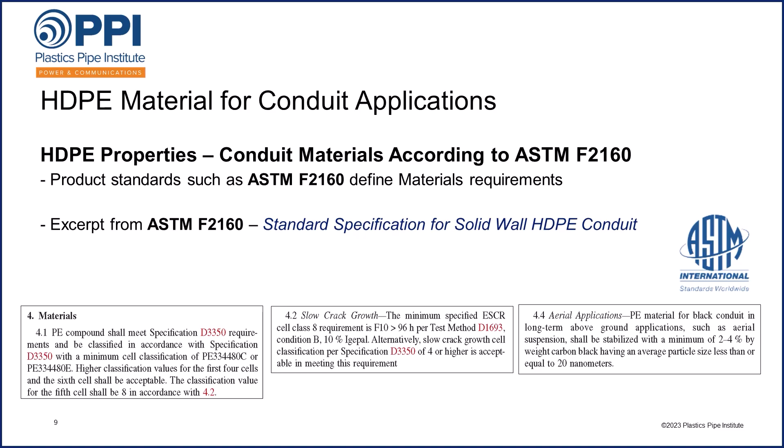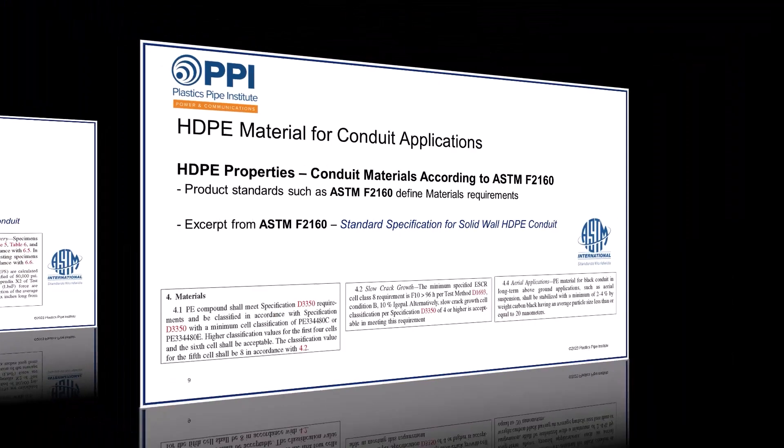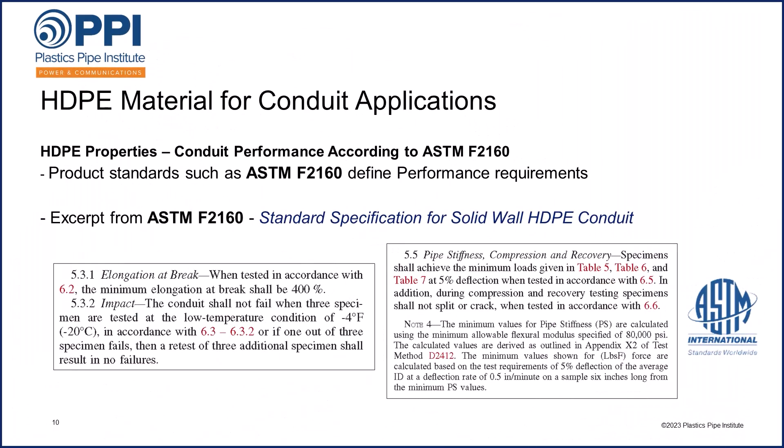Other performance requirements are also specified within ASTM F2160. For example, the elongation at break isn't just nice to have — it is a requirement as specified in section 5.3.1 that the minimum elongation at break shall be 400%. Impact characteristics are defined in section 5.3.2. Section 5.5 defines the pipe stiffness compression and recovery requirements. These and other requirements are already specified in this product standard, and you can see from this example that the standard imposes specific and rigorous requirements. Other product standards published by other organizations define similarly rigorous requirements. PPI and other manufacturers work hard to ensure all these industry standards have appropriate and similar requirements; however, they are not identical nor completely harmonized with each other.